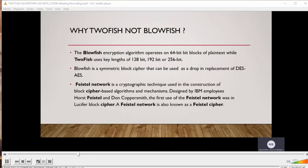Why Twofish, not Blowfish? When I was reading, I was asking myself this question. The Blowfish encryption algorithm operates on 64-bit blocks of plaintext, while Twofish uses key lengths of 128-bit, 192-bit, or 256-bit. There's no limitation when using Twofish. Blowfish is a symmetric block cipher that can be used as a drop-in replacement for DES. We have already learned about DES and AES in previous classes. When you have limitations, you cannot work with the algorithm in a deeper sense.